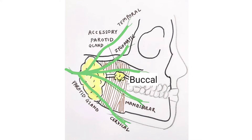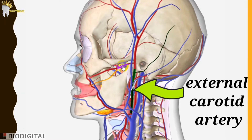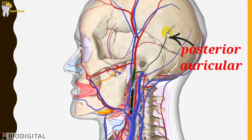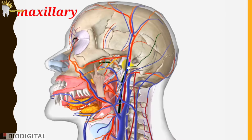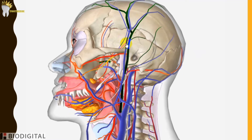The five branches are: temporal, zygomatic, buccal, mandibular, and cervical. The external carotid artery travels through the parotid gland and gives off branches within it — these are the posterior auricular artery, maxillary artery, and superficial temporal artery. The superficial temporal artery gives off another branch called the transverse facial artery.